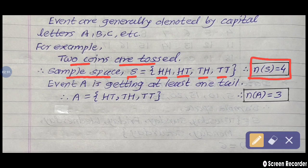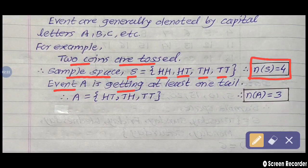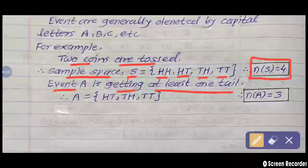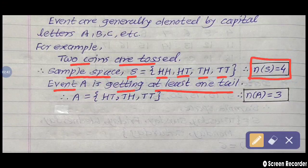Now one event is given. Event A is getting at least one tail. The meaning of 'at least' is very important here — at least one tail means a minimum of one tail is required in the sample point, but more than one tail is also acceptable.